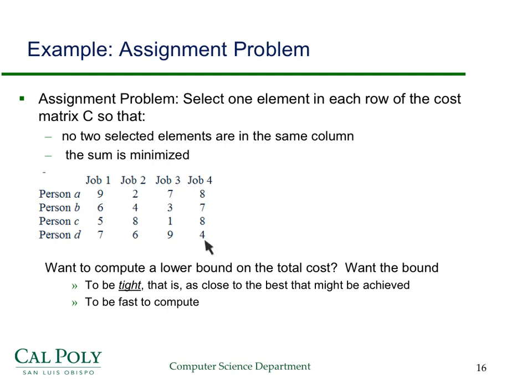There are lots of different assignments possible — in fact, the number of assignments is n factorial. So we're going to form the state space tree and prune it. We have to find a lower bound for the cost, because what we're trying to do is minimize the cost of the assignment — assign jobs in such a way that the cost is as low as possible.